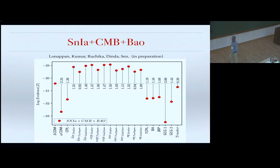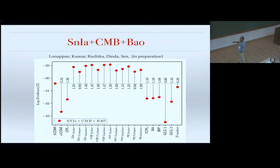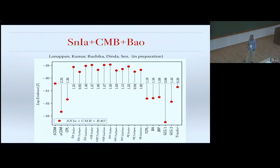Taking only supernova, CMB, and BAO data across around 20 different dark energy models: most models have insignificant difference from Lambda CDM. One exception is the GCG tracker parametrization, which has significant but not strong evidence against it (i.e., Lambda CDM is better). The CPL parametrization is roughly the same as Lambda CDM. When growth data is added, CPL acquires a very large evidence against it — Lambda CDM is much better than CPL when growth is included.